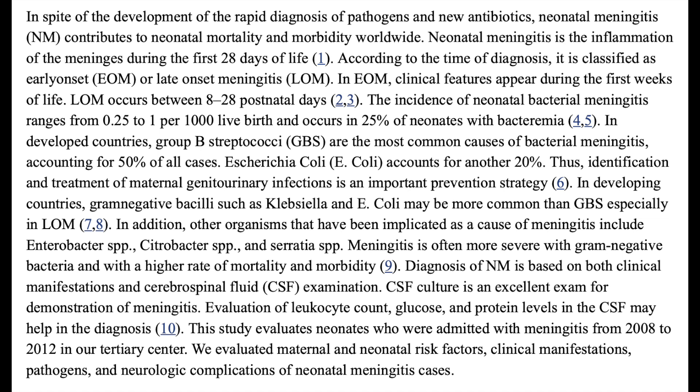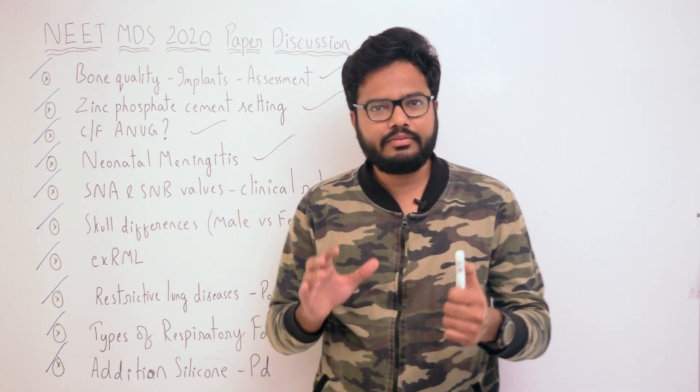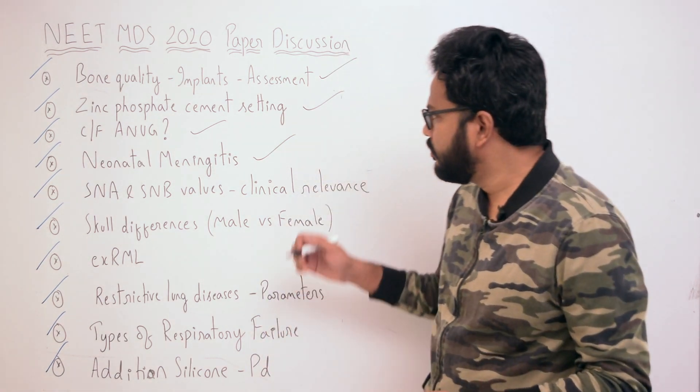In developed countries, Group B Streptococci are the most common cause of bacterial meningitis, accounting for 50% of all cases. E. coli accounts for another 20%. In developing countries, gram-negative bacilli such as Klebsiella and E. coli may be more common than GBS, especially in late-onset meningitis.